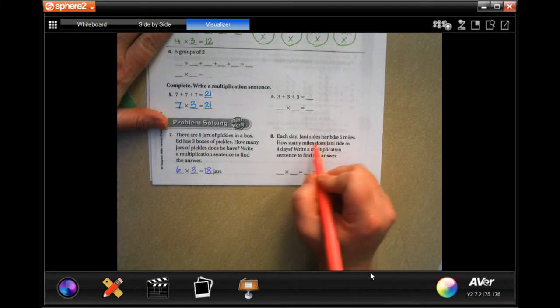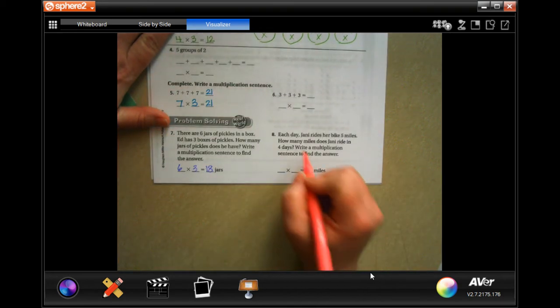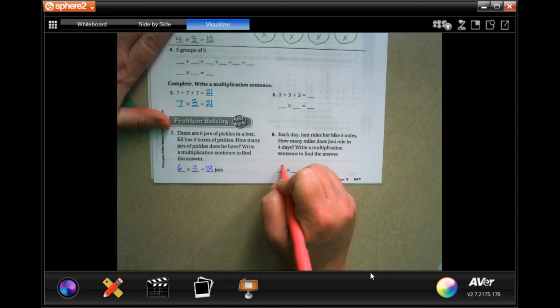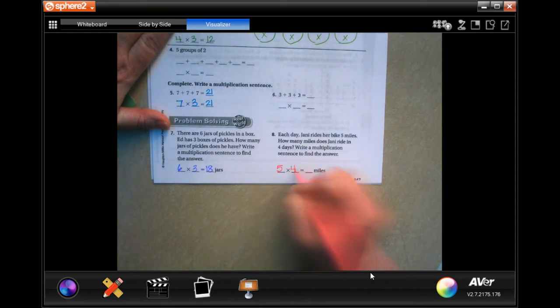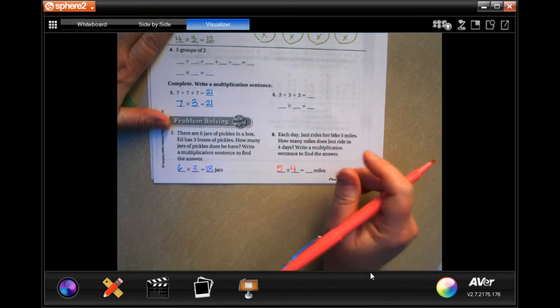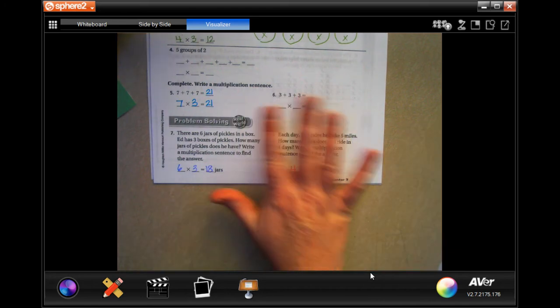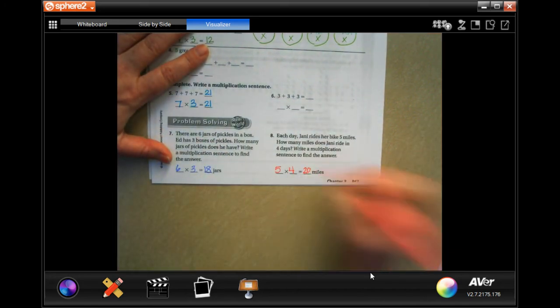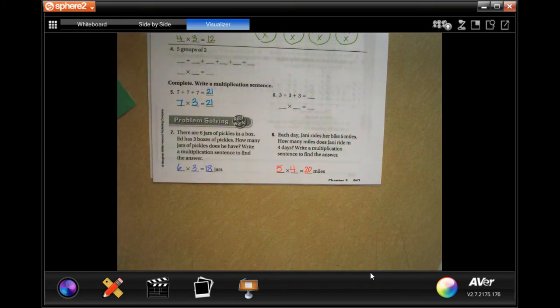Now each day, Jenny rides her bike five miles. How many miles does Jenny ride her bike in four days? So five miles for four days, five times four. Well, we're just going to count by five, four times. So five, 10, 15, 20. And it's already labeled for you. How nice.